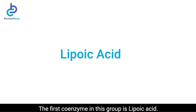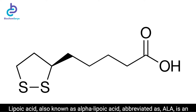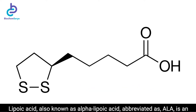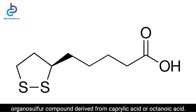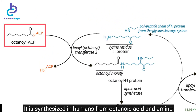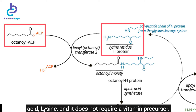The first coenzyme in this group is lipoic acid, also known as alpha-lipoic acid, abbreviated as ALA. It is an organic monosulfur compound derived from caprylic acid or octanoic acid. Chemically, it is named 6,8-dithiooctanoic acid or thioctic acid. It is synthesized in humans from octanoic acid and the amino acid lysine, and it does not require a vitamin precursor.